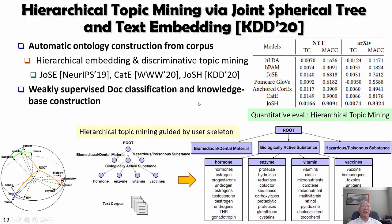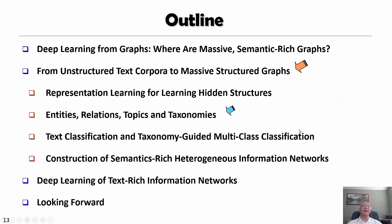Not only can you get one level, you can actually get a multi-level result. Suppose you give a skeleton hierarchy; under it, in the lower level you want to get hormone, enzyme, vitamin, and vaccine. Going through PubMed data, we can actually get these vaccine and vitamin entries and their corresponding words out in a very high-quality way. This can be done to perform hierarchical topic mining.